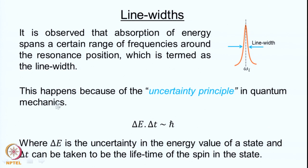This range of frequencies contributes to what is called the line width. The absorption of energy spans a certain range of frequencies. The signal will have a shape like a peak, and the central frequency is where energy should ideally be absorbed, but there is absorption at slightly different frequencies as well, with different amounts of energy absorbed. If we take the width at half height of this line, that is called the line width.